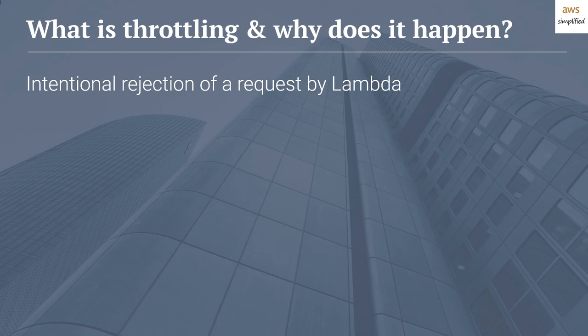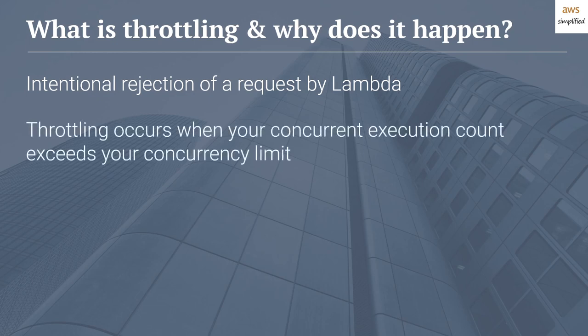Lambda will reject your request — but why does this occur? Throttling occurs when your concurrent execution count exceeds your concurrency limit. As a reminder, Lambda can handle multiple instance invocations at the same time, and the sum of all of those invocations amounts to your concurrent execution count. So if you have more invocations running that exceed your configured limit, all new requests to your Lambda function will get a throttling exception.